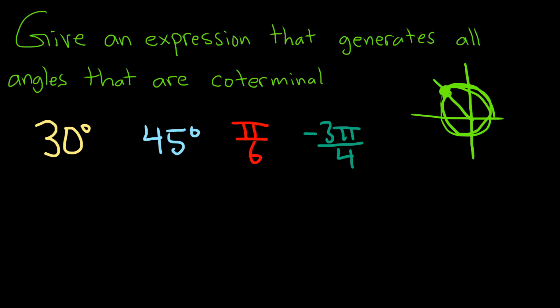Let's go ahead and answer all of these questions. They're actually really simple. For 30 degrees, an expression that would give all angles would be 30° + 360°n, where n is an integer. I'll specify that up here: n is an integer.